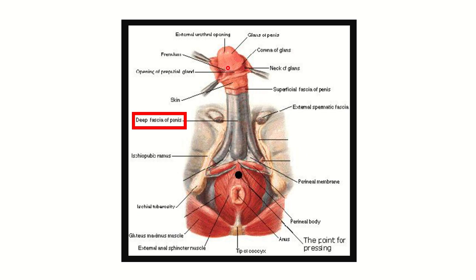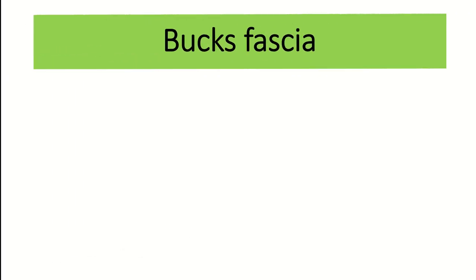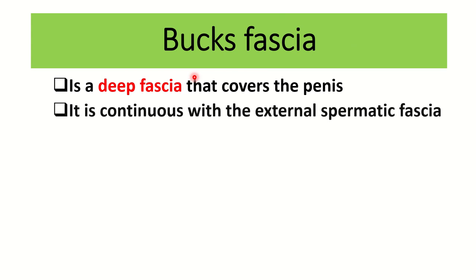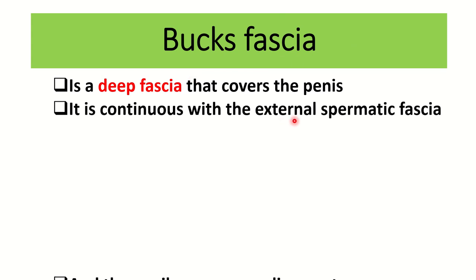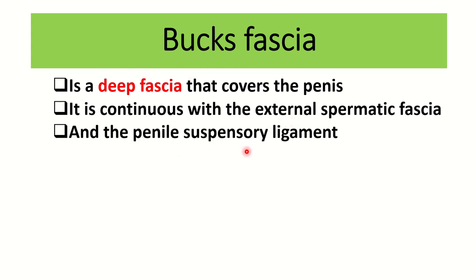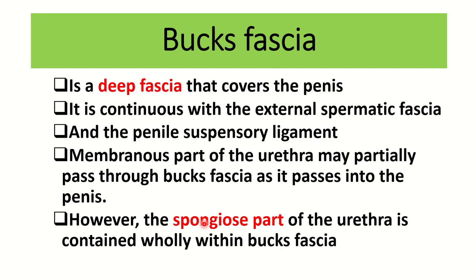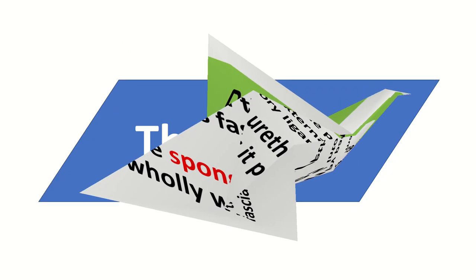In quick review: Buck's fascia is the deep fascia that covers the penis. It is continuous with the external spermatic fascia and with the penile suspensory ligament. The membranous part of the urethra may partially pass through Buck's fascia, but the spongy part of the urethra lies along its whole length within the fascia. This is all about Buck's fascia or the deep fascia of the penis. Thank you all.